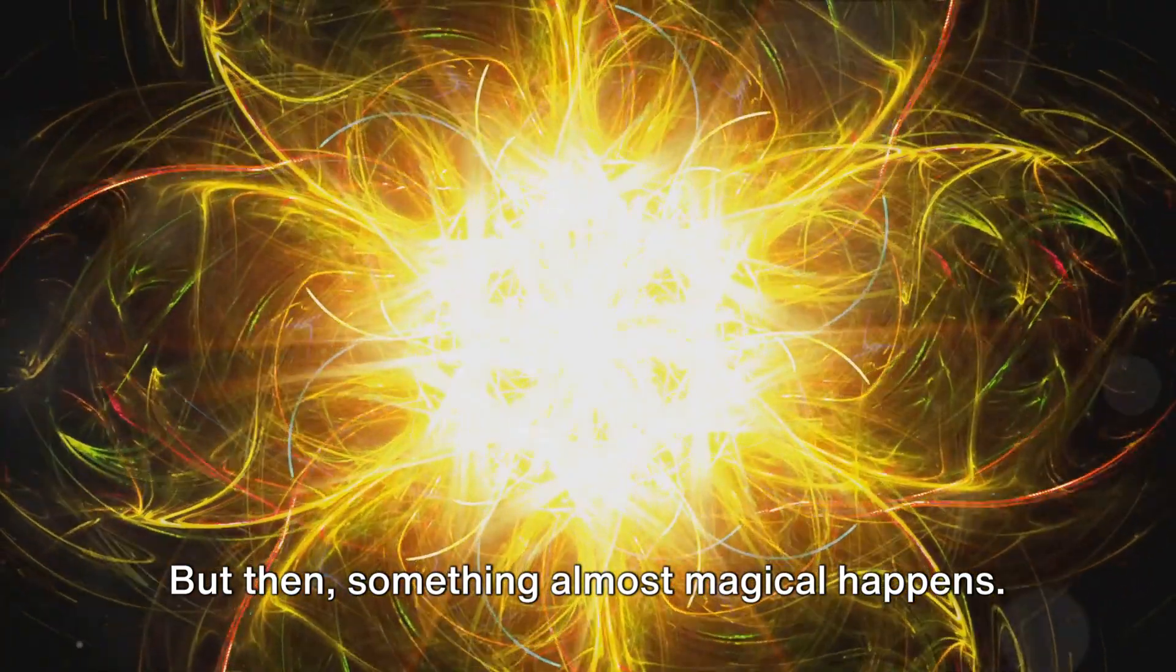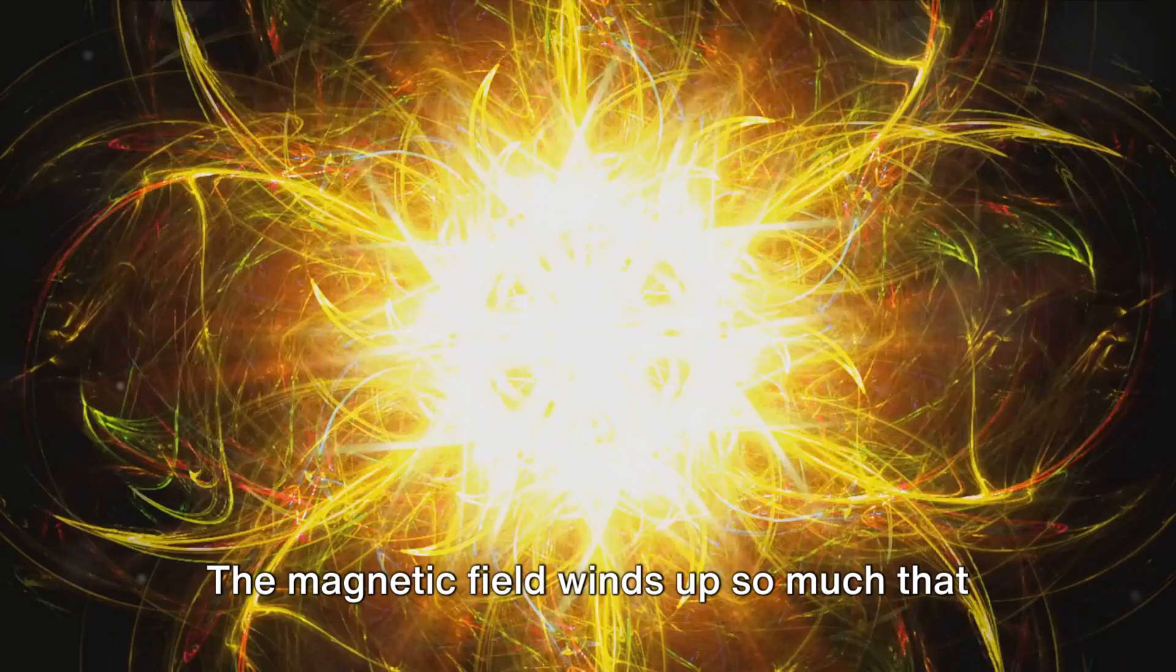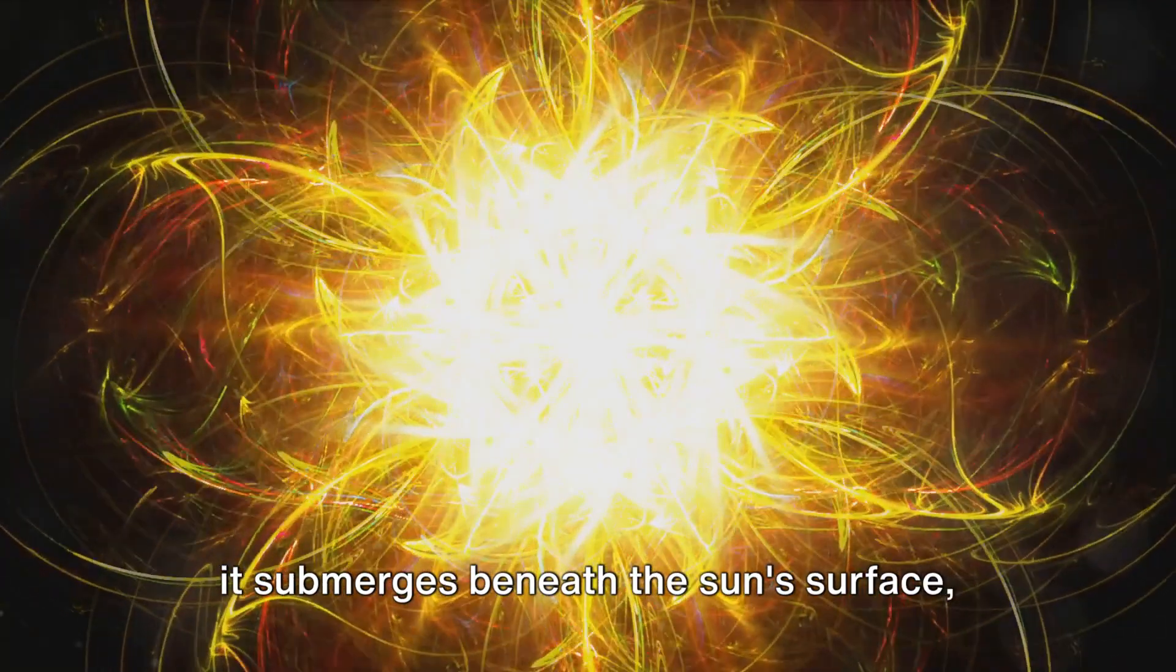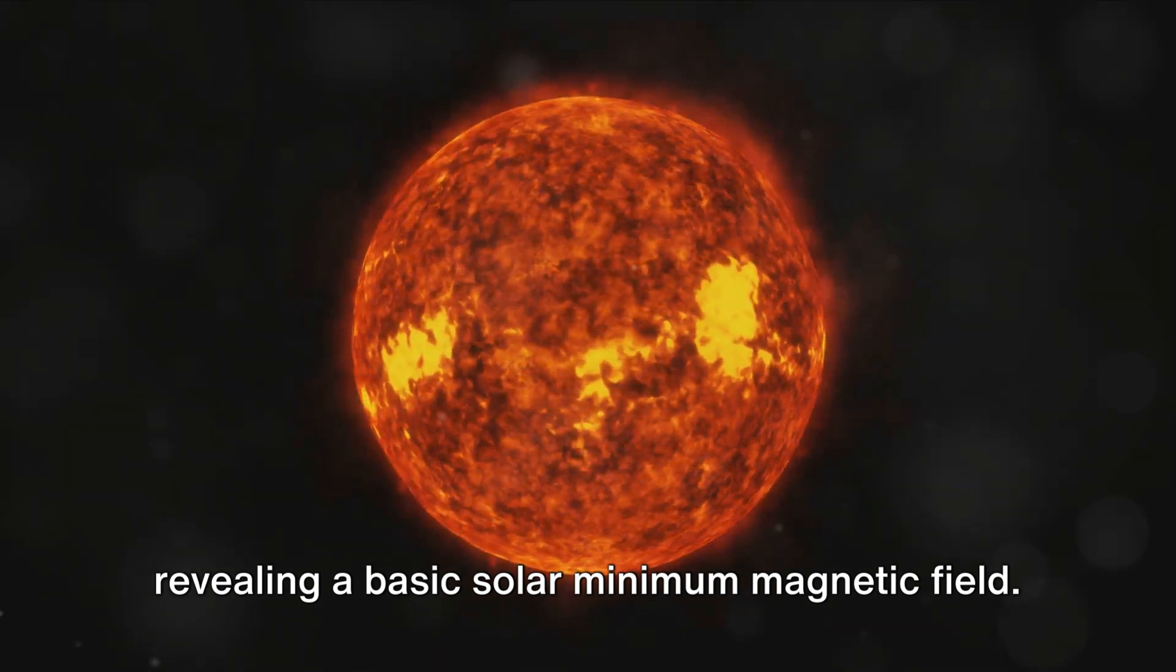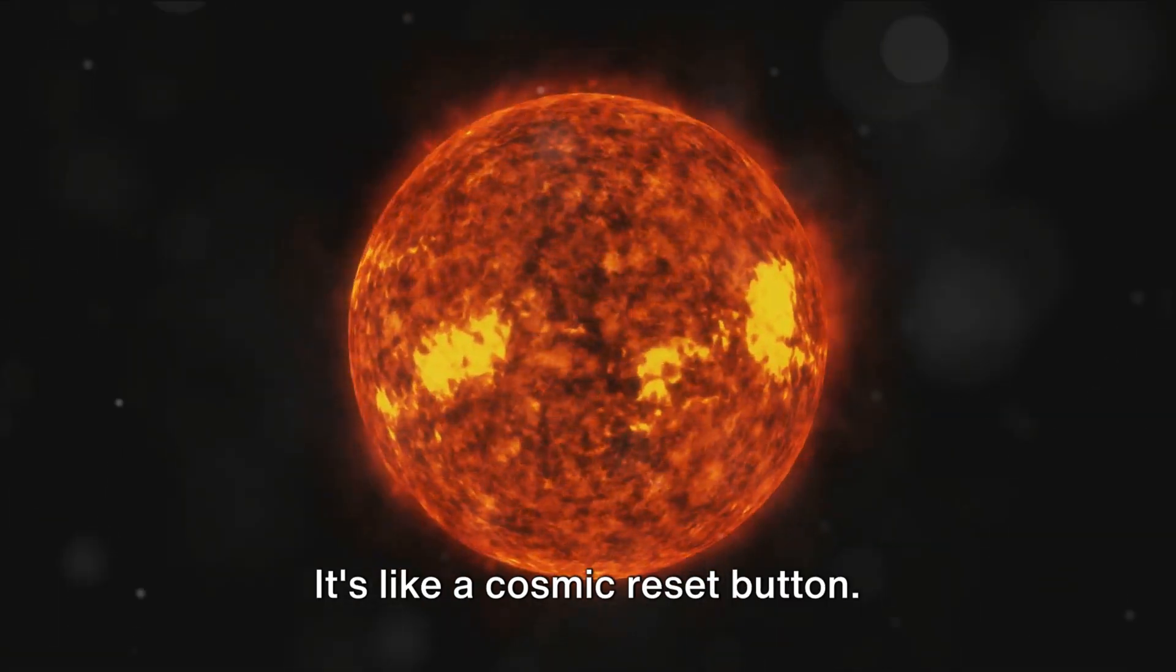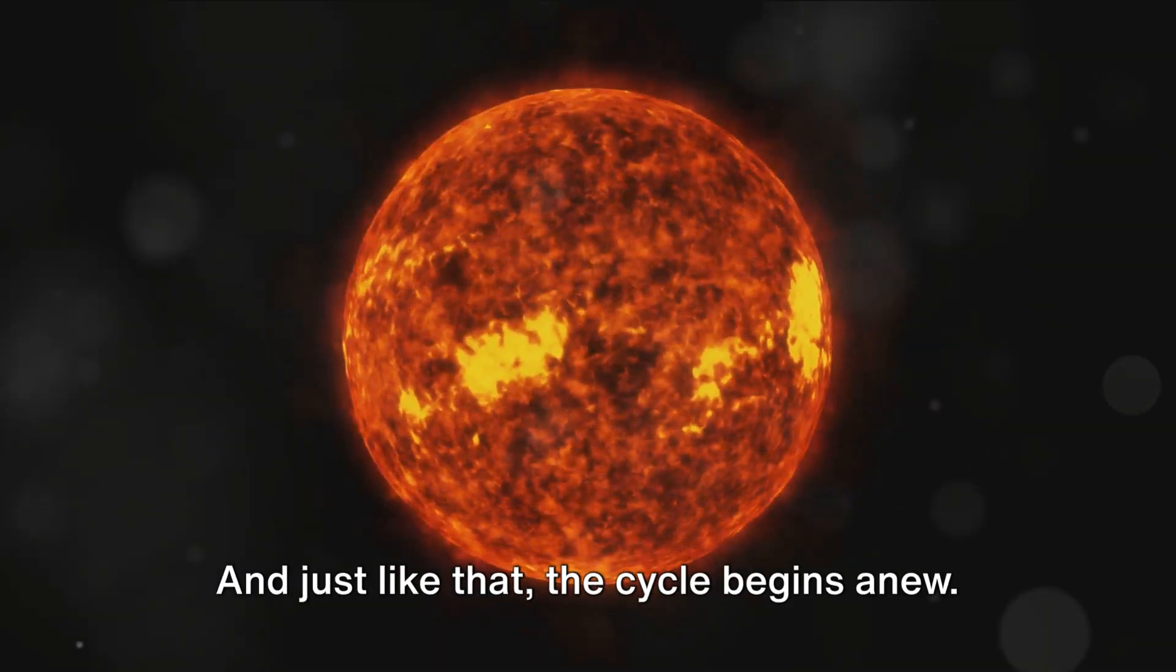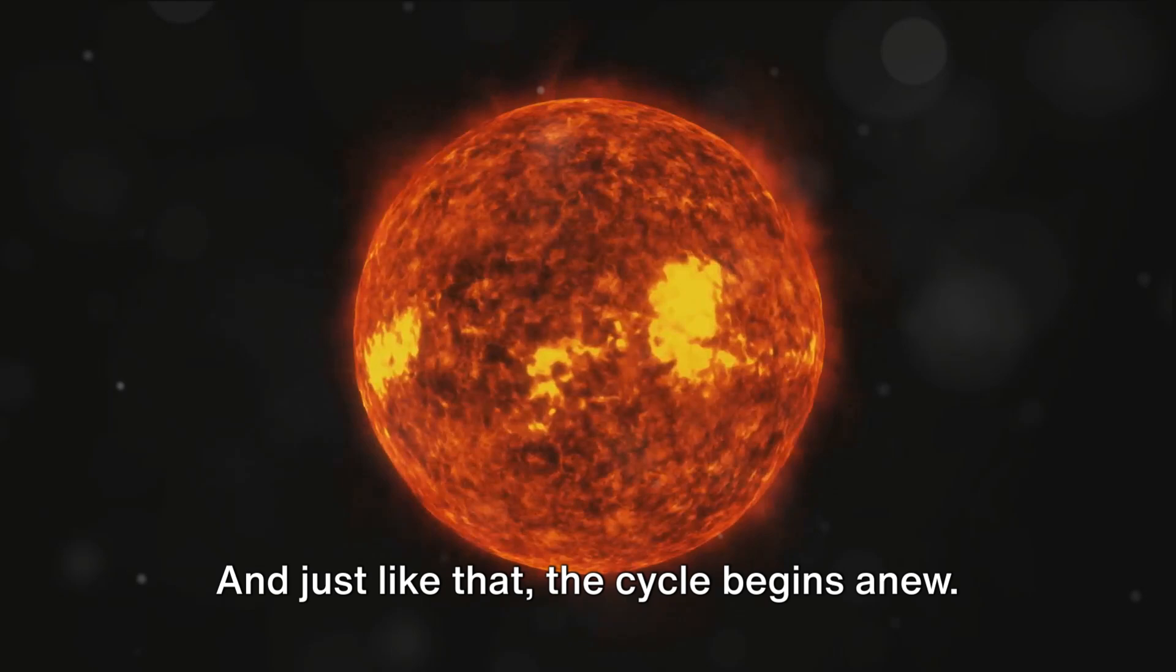But then, something almost magical happens. The magnetic field winds up so much that it submerges beneath the Sun's surface, revealing a basic solar minimum magnetic field. It's like a cosmic reset button. And just like that, the cycle begins anew.